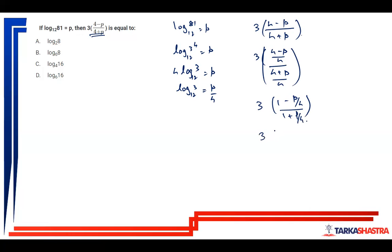So this is 3 into 1 minus log 3 to the base 12 upon 1 plus log 3 to the base 12, which is 3 into log 12 to the base 12 minus log 3 to the base 12 upon log 12 to the base 12 plus log 3 to the base 12.